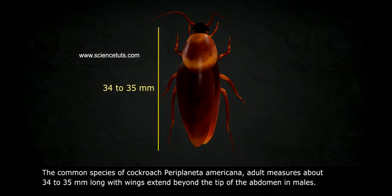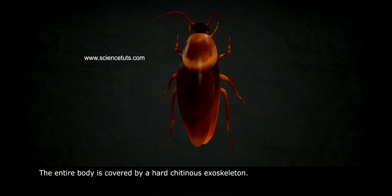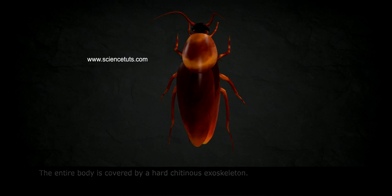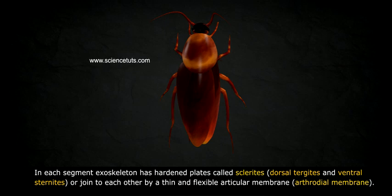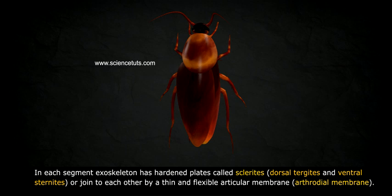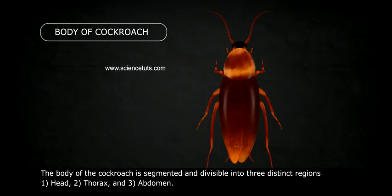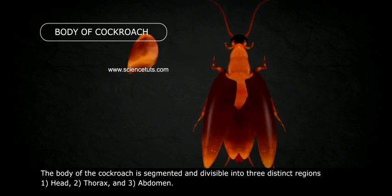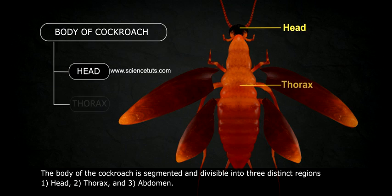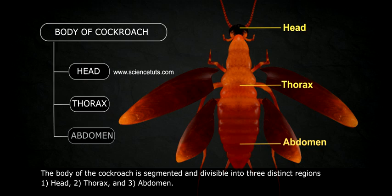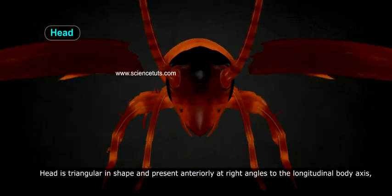The common species of cockroach, Periplaneta americana, adult measures about 34 to 35 mm long, with wings extending beyond the tip of the abdomen in males. The entire body is covered by a hard chitinous exoskeleton. In each segment, the exoskeleton has hardened plates called sclerites — dorsal tergites and ventral sternites — joined to each other by a thin and flexible articular membrane called the arthrodial membrane.